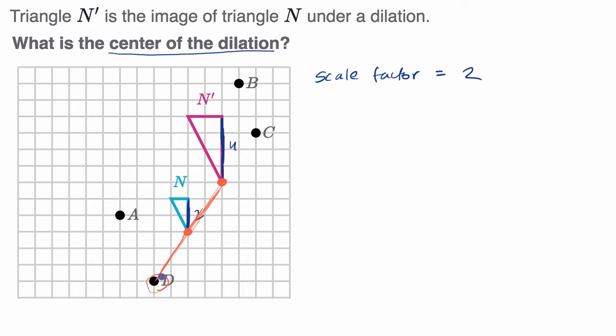And you can also verify that. Notice, this first point on the original triangle, its change in X is two and its change in Y is three to go from point D to that point. And then if you want to go from point D to its image, well, now you've got to go twice as far. Your change in X is four and your change in Y is six.